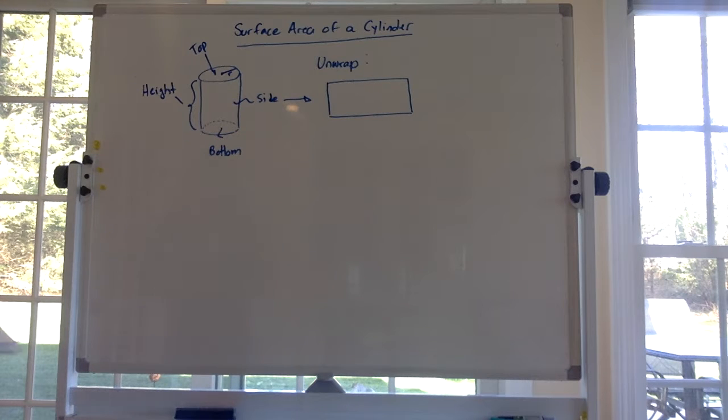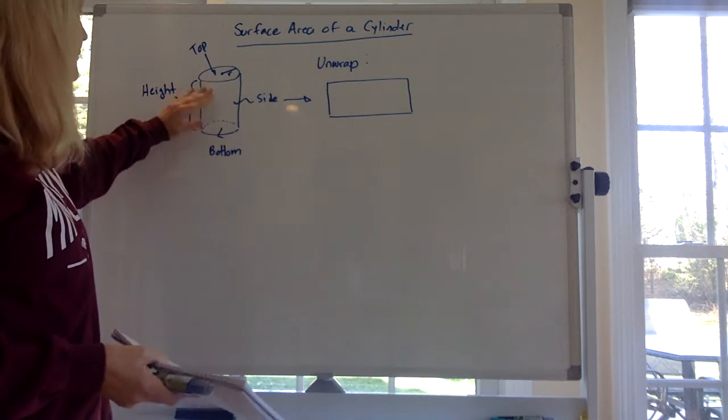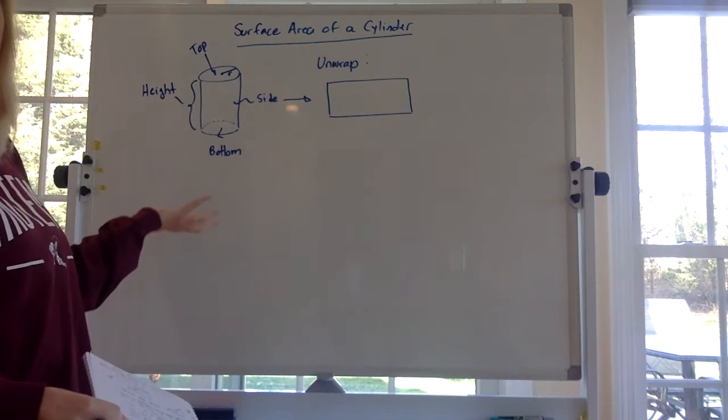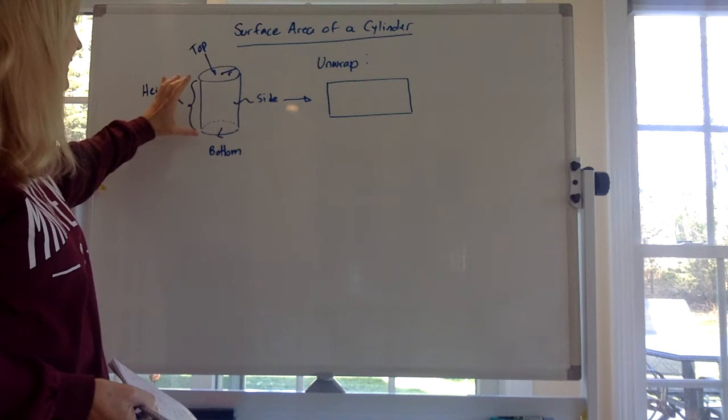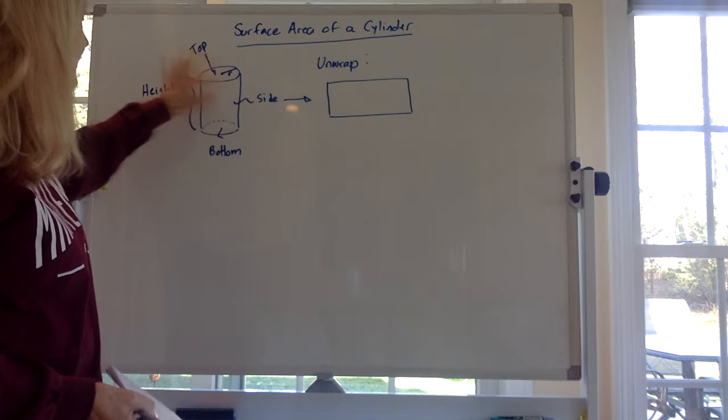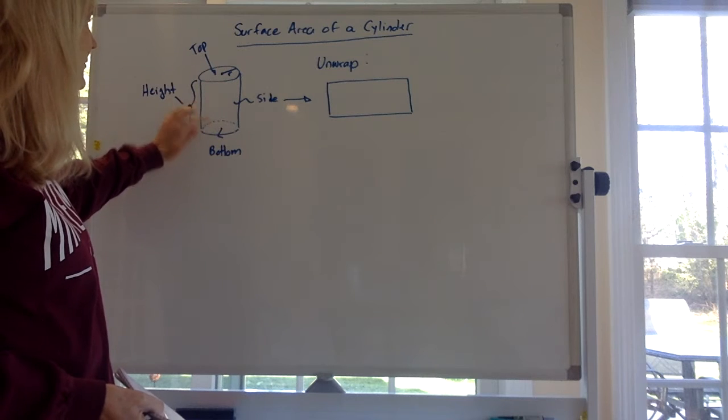So remember a cylinder is a circular thing. I like to think of a soup can. So basically this is a soup can and it's got a certain height and it's got a round top and a round bottom.